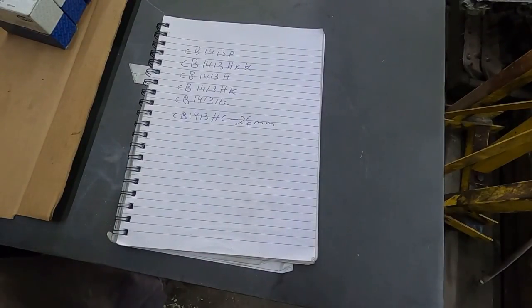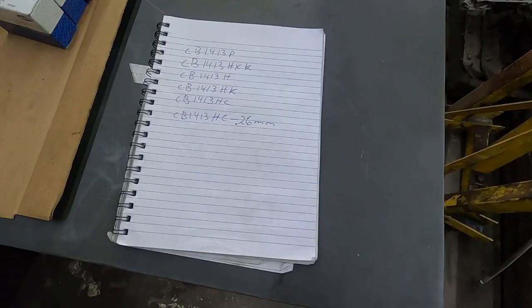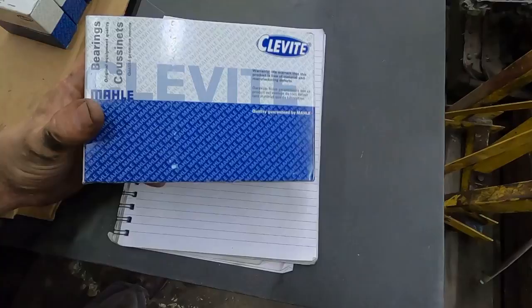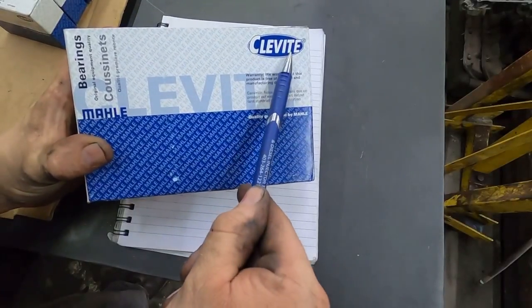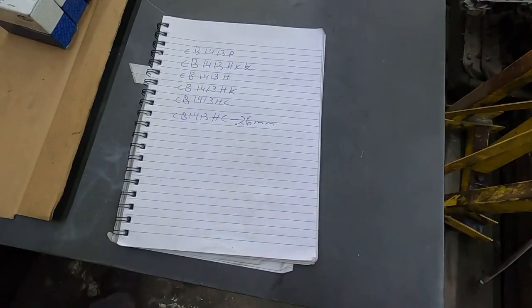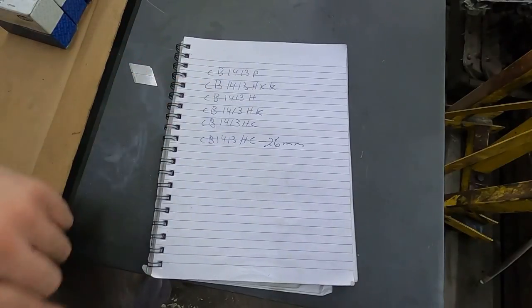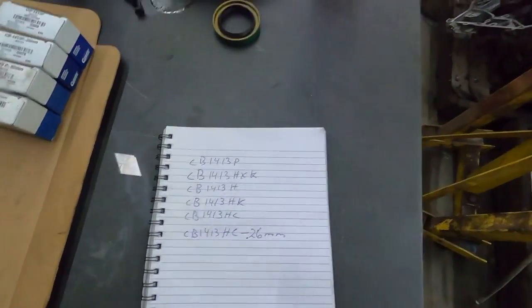Alright guys, so we're going to have a little chat about the designation on Moll bearings. Not every manufacturer is the same. I usually use Moll or Clevite, whatever you want to call it, depending on whether they're calling it Clevite or Moll. It's the same company. We're talking about designations of bearings.